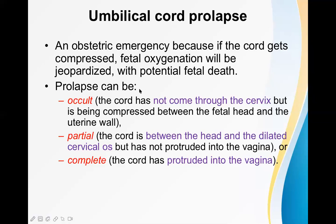Prolapse of the umbilical cord can be of different types. One is called occult prolapse, another is partial prolapse, and the third is complete prolapse. Prolapse means the umbilical cord is coming downwards while the baby is still up. Occult means the cord has not come through the cervix but is being compressed between the fetal head and the uterine wall — hidden, we cannot see anything coming outside. Partial means the cord is between the head and the dilated cervical os but has not protruded into the vagina. Complete means the cord has protruded into the vagina.